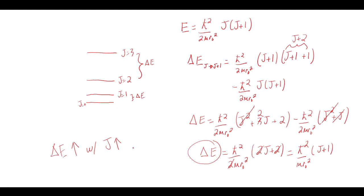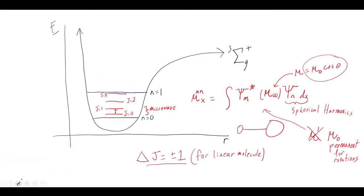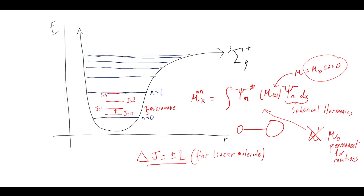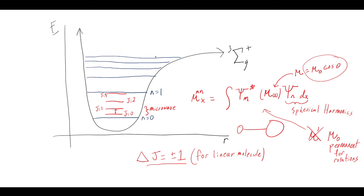The spacing ΔE depends on J and increases as J increases — which is exactly the opposite of vibrational states. Vibrational states actually get spaced closer together as you go up in quantum number; they converge together toward the dissociation limit. That's one key difference between strictly rotational and strictly vibrational energy level spacing.